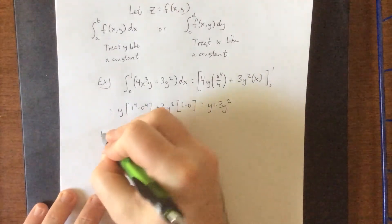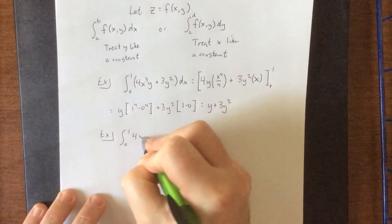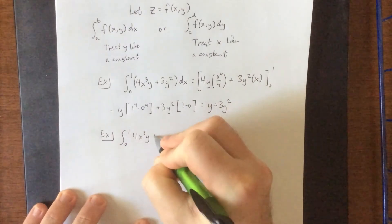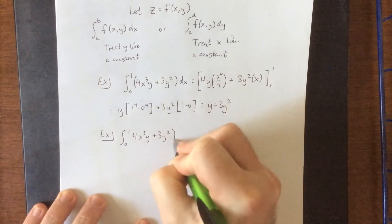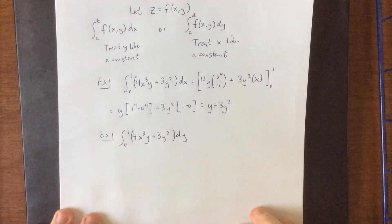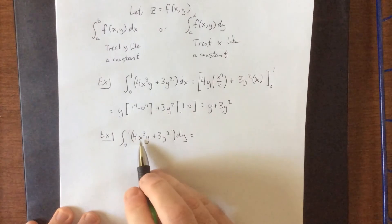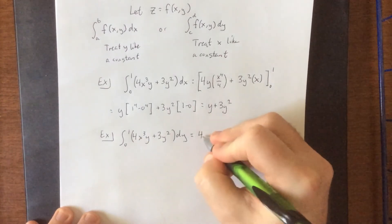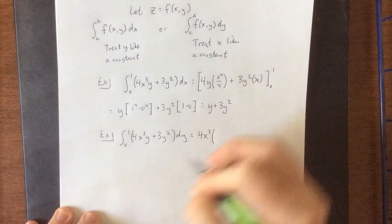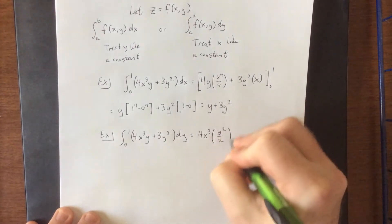Now I could also consider this exact same situation and change only one thing, and the end result changes pretty dramatically. I'm going to change the differential from dx to dy. Now we'll be treating y as though it's our variable, and we'll be treating x as though it's a constant. So for the first term, 4 is a constant multiple, x³ is a constant multiple, 4x³ is a constant multiple, and we integrate y with respect to y. That'll be y² over 2.